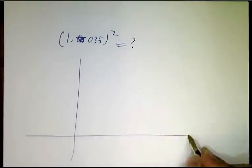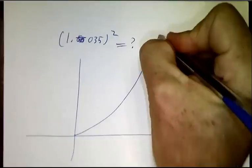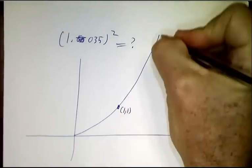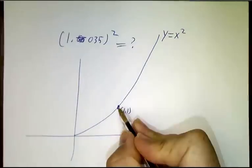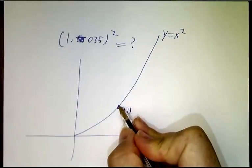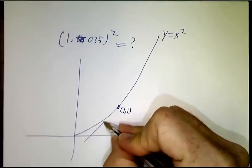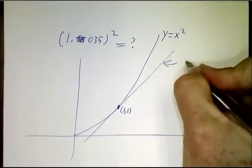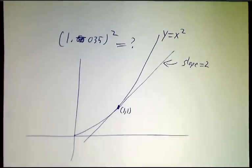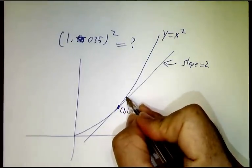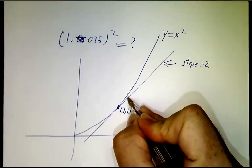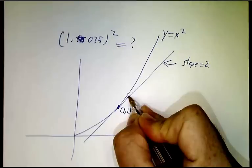At least to a very good approximation. Because we saw last time that the curve y equals x squared goes through the point (1,1), and as it goes through the point (1,1), it's increasing with a slope of 2. So if I want the value of the function somewhere close to 1, what I can do is calculate the value of where it would be if it were on the straight line.